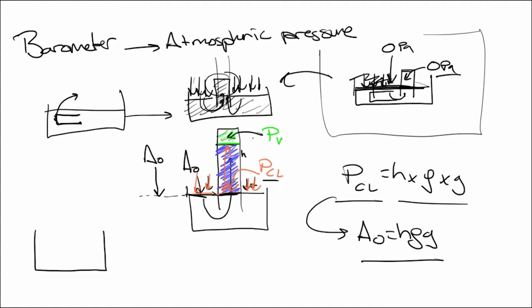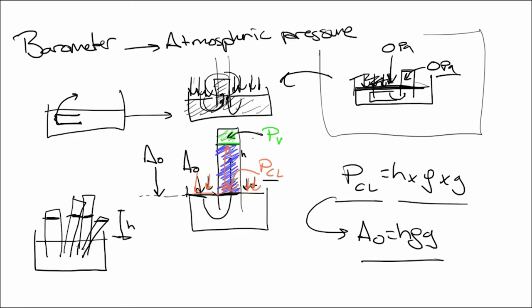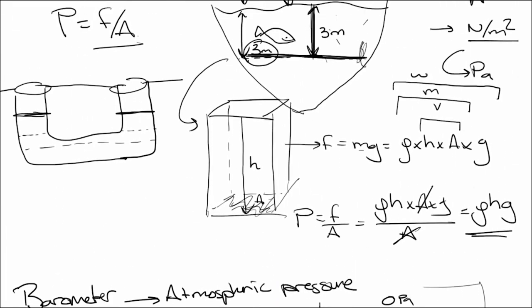No matter how you tilt or orient the pipe, the vertical height H always remains the same. It also doesn't matter how wide or narrow the pipe is — a fat pipe or a skinny pipe will give the same height from the liquid surface. This is because the cross-sectional area cancels out in the equation, leaving only H × ρ × G.